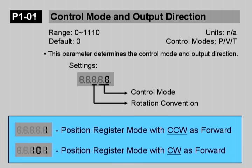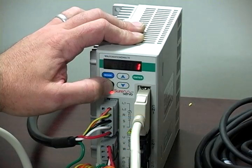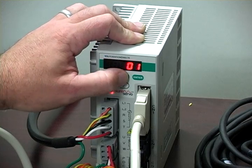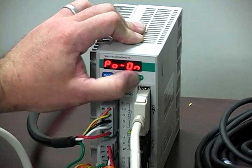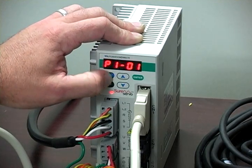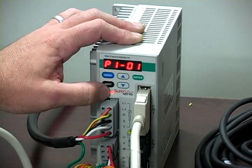Set the control mode first. P101 selects the control mode and direction. 0-0-0-0-1 will result in PR mode, that's position mode using the internal registers, with the motor spinning counterclockwise as forward. The second most significant bit sets direction. I'm going to use a setting of 0-1-0-1, which will also result in PR mode, but with the motor spinning clockwise as forward.